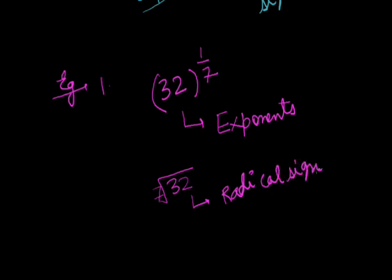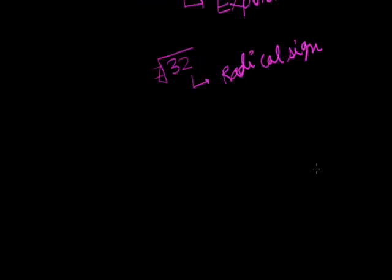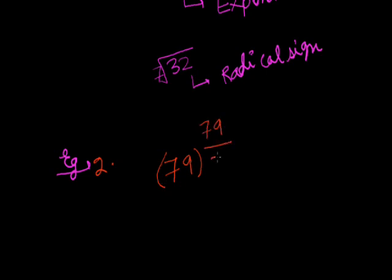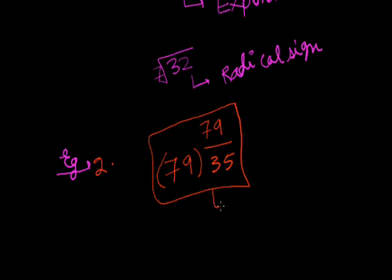We will start with some other examples. Suppose 79 whole raised to the power 79 upon 35. This whole term, written as 79 raised to the power 79 upon 35, is in exponent form. Exponent form is always expressed as power form.